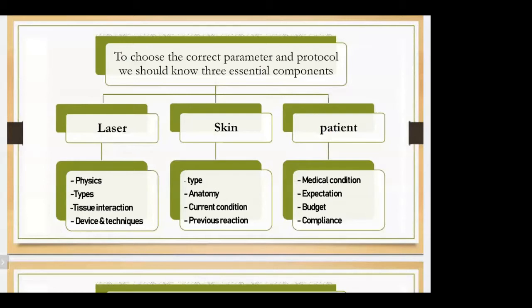When the patient comes wanting laser therapy, we have to choose the correct parameter and protocol. To choose the correct parameter and protocol, we have to consider three essential components: laser, skin, and patient. For the laser, we understand physics, types, tissue interaction and device techniques. For the skin, we evaluate type, anatomy, current condition and previous reaction. For the patient, we consider medical condition, expectation, budget and compliance.